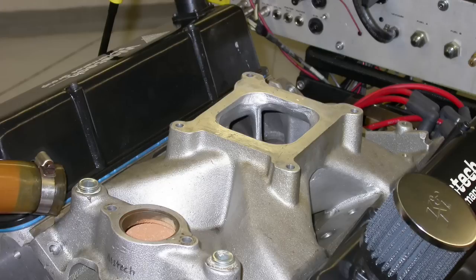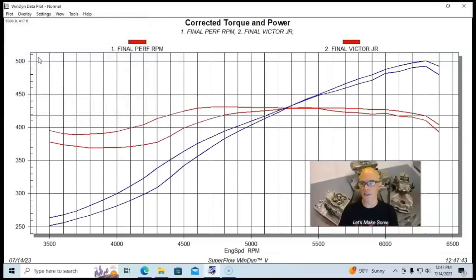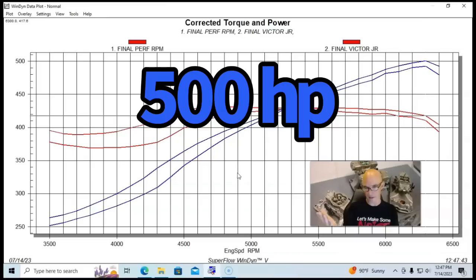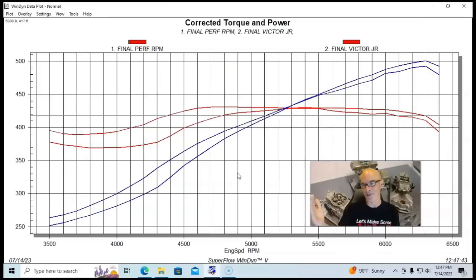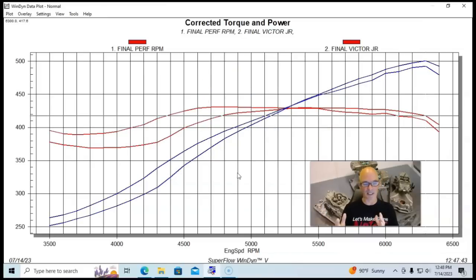Now let's see what happens when we compare this to the single plane Victor Junior intake manifold. The two quintessential single plane versus dual plane deals. This did exactly what we expect when we do single plane versus dual plane combinations. The single plane made more power at the top. In fact, this thing reached right at 500 horsepower—500.6, so you can round that up to 501 if you want. Oddly enough, this is where a lot of guys get in trouble thinking that the dual plane is made for torque.